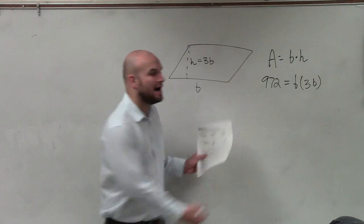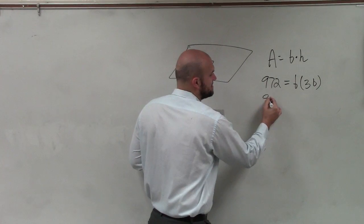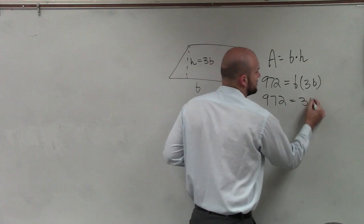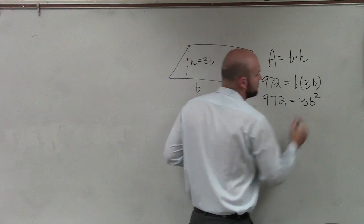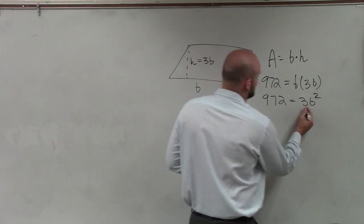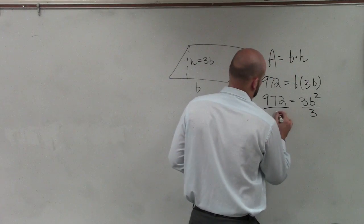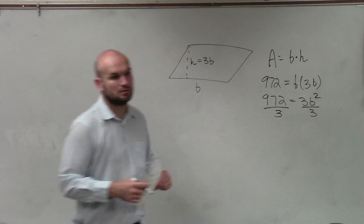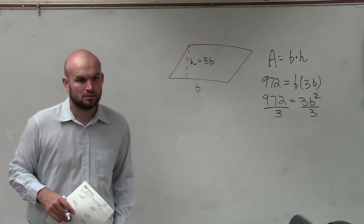So now, I can go ahead and multiply b times 3b, which is 972, equals 3b squared. So now, to solve for this, I'll divide by three. Did you figure out the height and the base? We've got the same length between them. Yeah. That's right. Yeah.